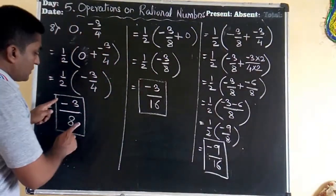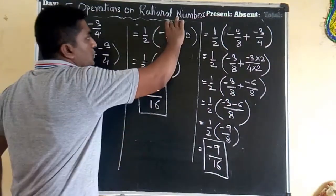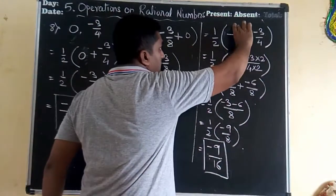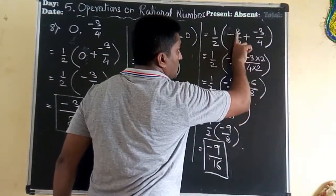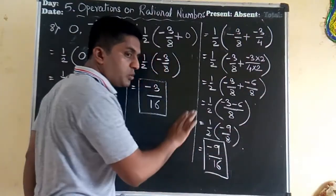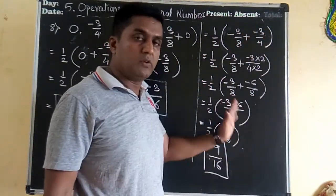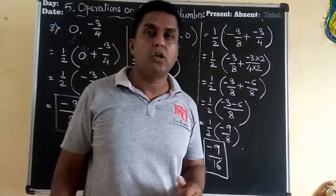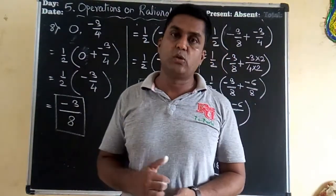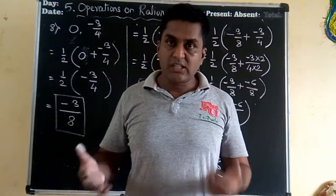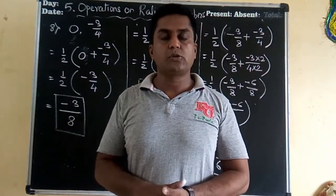Remember: the first fraction you find must be used in both the second and third calculations — it can be placed on either side. Hope you have understood practice set 23, which was about finding 3 rational numbers between 2 rational numbers. Solve everything neatly in your notebook. In the next lecture we will see practice set 24. Thank you very much.